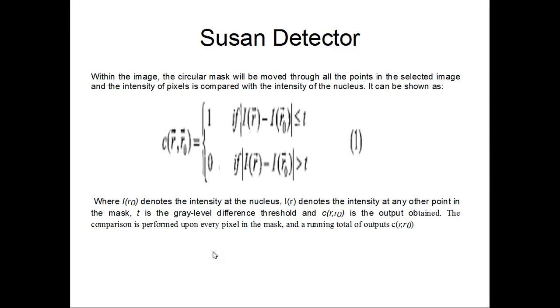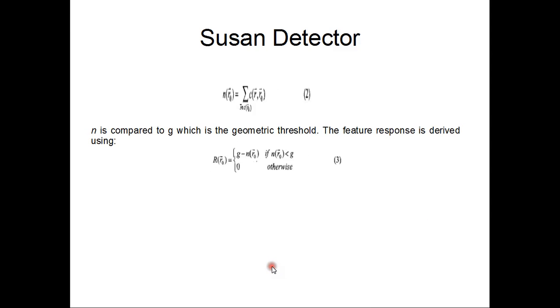Within the image the circular mask will be moved through all the points in the circular image and the intensity of pixels is compared with the intensity of the nucleus, and it can be shown by this equation, where I_R denotes the intensity at any other point in the mask. T is the grayscale difference threshold and C_RR0 is the output obtained. The comparison is performed upon every pixel in the mask and the running total of the output C_RR0 is obtained. And N is compared to G which is the geometric threshold and the feature response is derived using this.